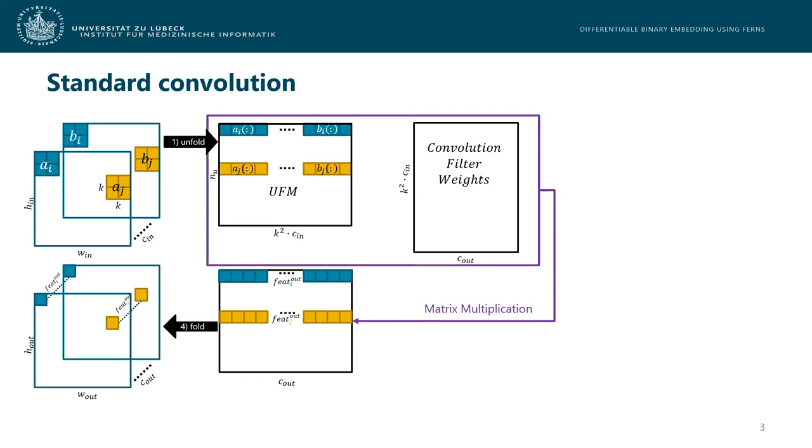In doing so, the convolution operation can be formulated as a matrix multiplication with the convolution filter weights. The resulting matrix finally will be folded back to an according spatial representation and forms the output of this operation.